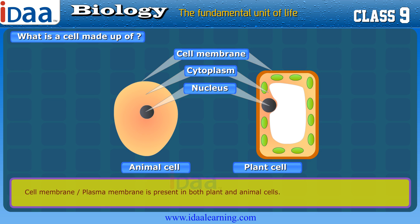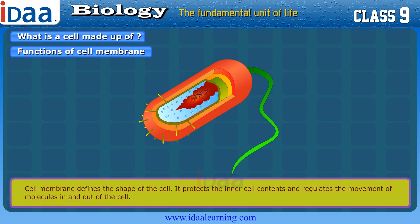Cell membrane is made up of proteins and fats. The cell membrane defines the shape of the cell. It protects the inner contents and regulates the movement of molecules in and out of the cell.